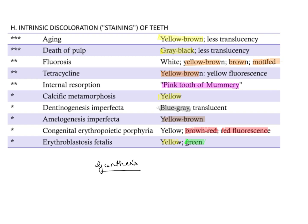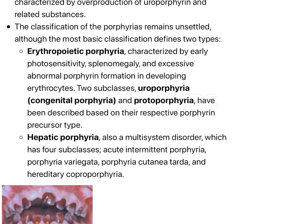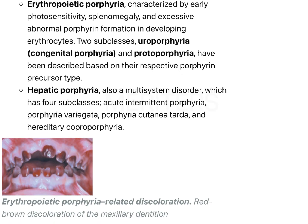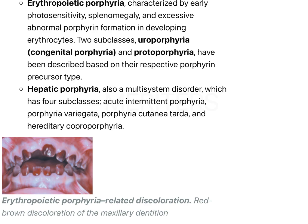There is diffuse discoloration of the dentition due to deposition of porphyrin in the teeth. When you see these teeth under Woods UV light, you will see red-brown discoloration with red fluorescence. This staining is more demarcated and extreme in the deciduous dentition because porphyrin is present in both enamel and dentine. In permanent teeth, only the dentine is affected, whereas in primary teeth, both enamel and dentine are affected.